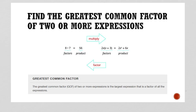So what is factoring? Up until now we've been multiplying factors together to get products. Here's a factor, here's a factor, and whenever we multiply this times this, we get a product. Multiplying is going from the factors side to the product side. Factoring is going from the product side back to the factors — so we're working backwards. We're going from 56 to writing down what the factors are.